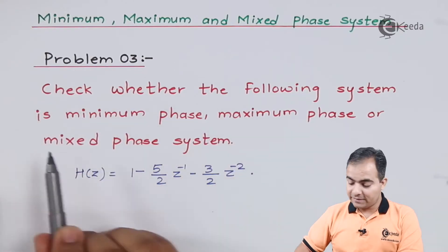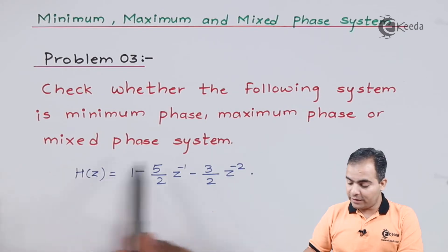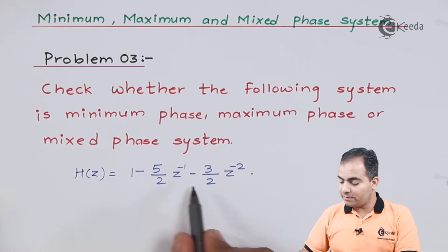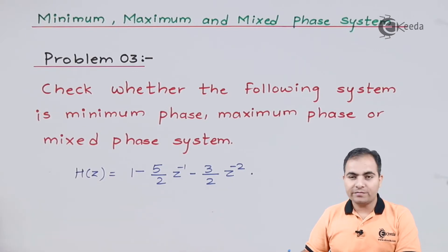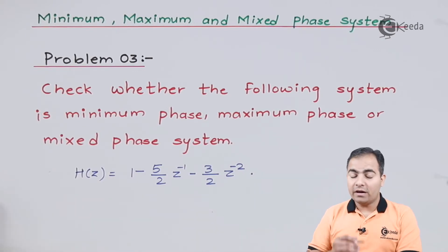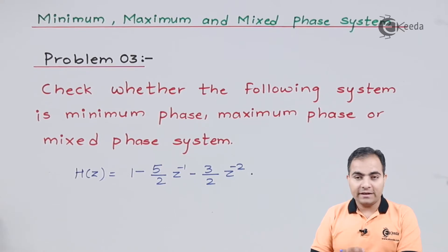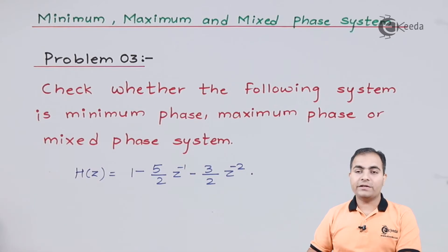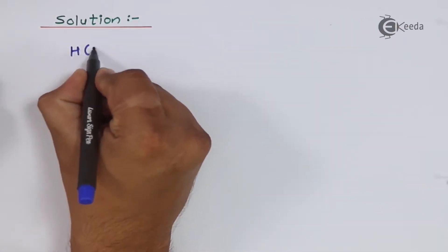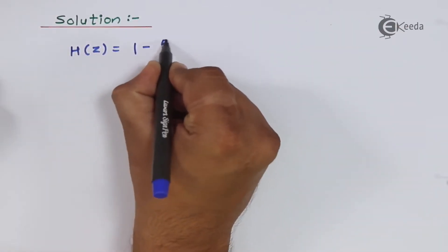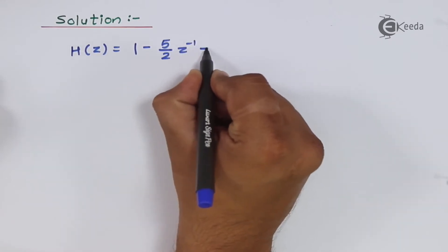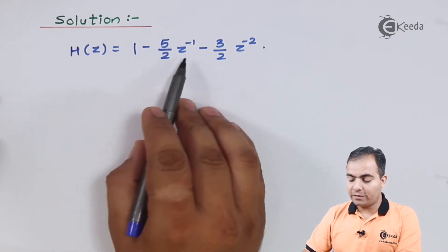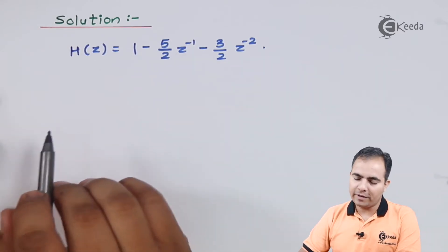Check whether the following system is minimum phase, maximum phase, or mixed phase system. The function is given as H equal to 1 minus 5/2 z⁻¹ minus 3/2 z⁻². We will see how to obtain the result and then conclude whether this H is related to minimum, maximum, or mixed phase system.